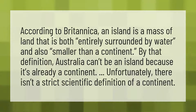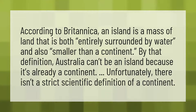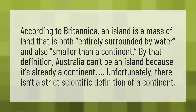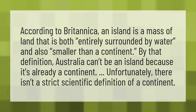According to Britannica, an island is a massive land that is both entirely surrounded by water and also smaller than a continent. By that definition, Australia can't be an island because it's already a continent. Unfortunately, there isn't a strict scientific definition of a continent.